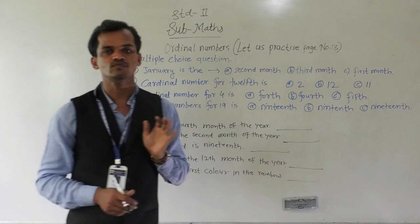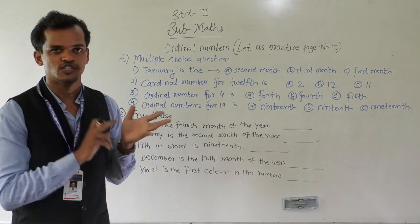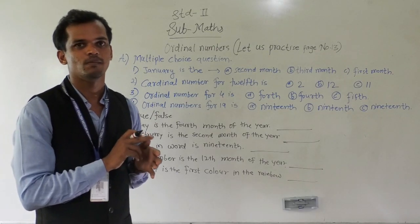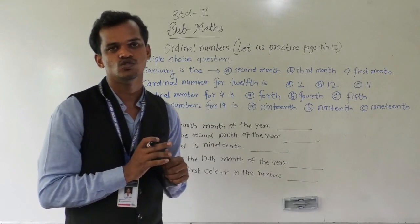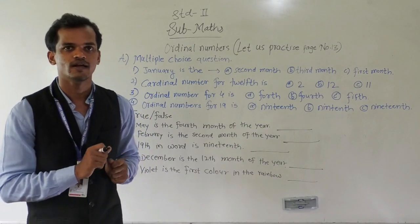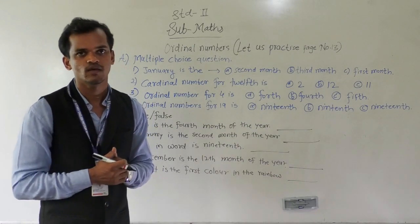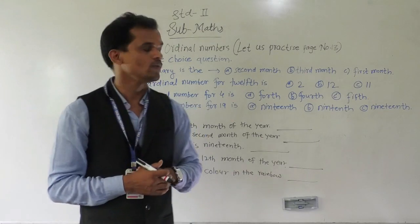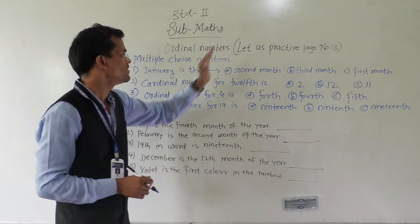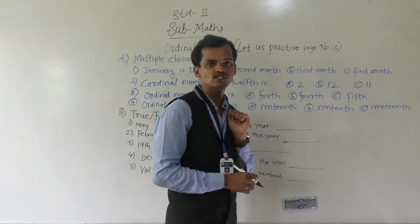What is the sequence of the months? See here: January, February, March, April, May, June, July, August, September, October, November, and December. This is the correct order of the months of the year. So, January is the second month, third month, or first month?